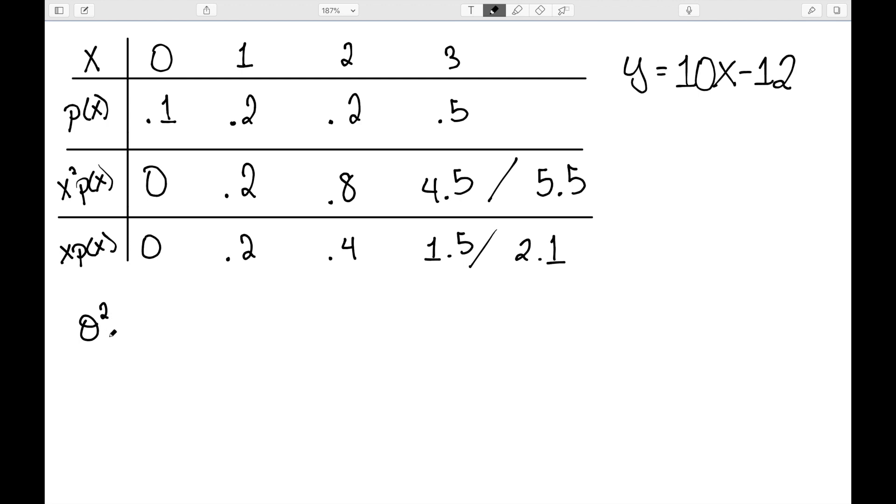So the variance for x is going to be 5.5 minus 2.1 squared, which is equal to 1.09.